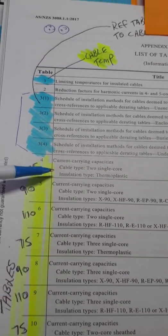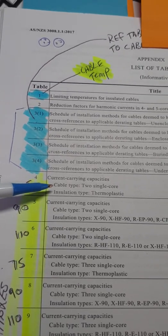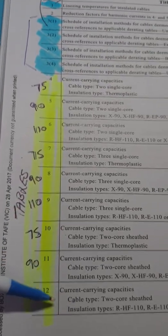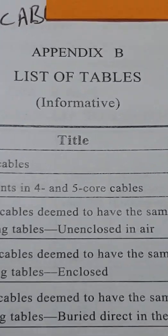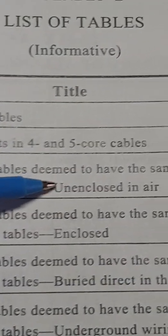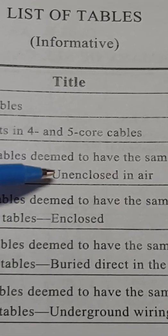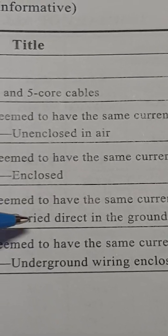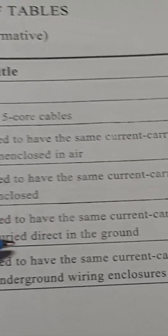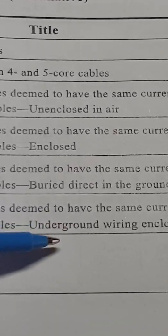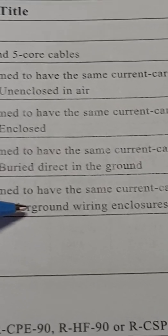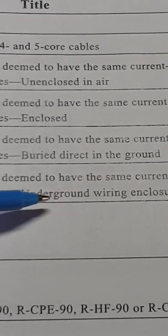The tables go through all the different temperature ratings for two-core and single-core cables — either multi-core or single core. Looking at the first four installation types: unenclosed in air, which means a cable fixed to a wall or open surface; enclosed in a conduit but in open air; buried direct in the ground, such as under a slab; and underground wire enclosure, meaning any cable buried underground in an enclosed situation — a duct, conduit, or PVC enclosure.